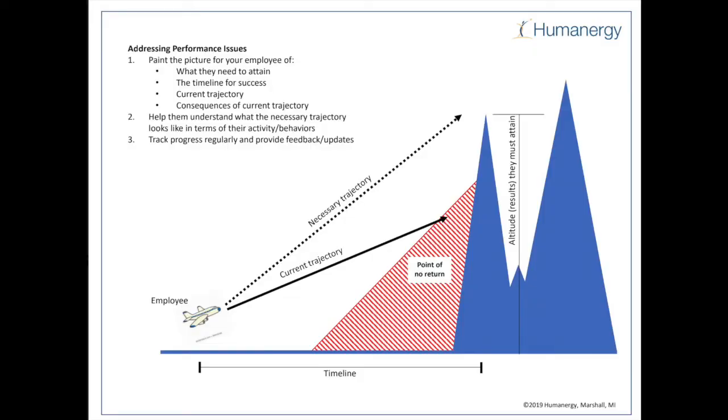If you draw a straight line on a piece of paper as the base, and then on the right-hand side, you draw triangular spikes that look like mountains. What we're framing up is a triangle, a timeline, and the altitude of the mountains being the results that people have to attain.